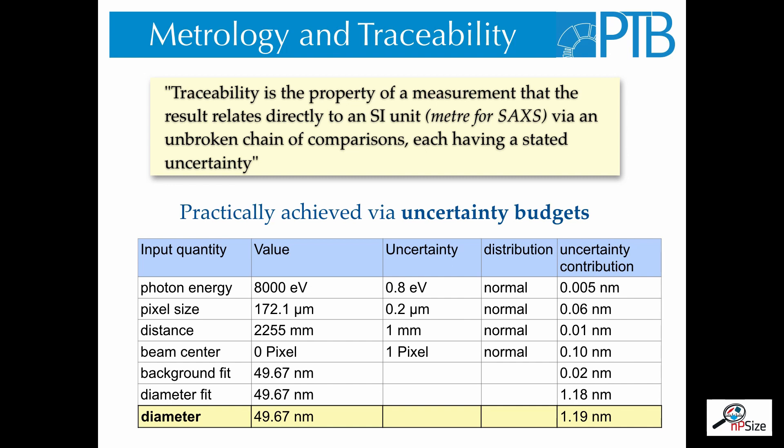In practice, we achieve this via a so-called uncertainty budget. At the bottom, you can see such an uncertainty budget. Each row of the uncertainty budget corresponds to an input quantity, which is required to compute the final value of the diameter, which is shown as the last row. For each of these input quantities, we determine the value, the uncertainty of the quantity, and how much it influences the final value, the so-called uncertainty contribution. In the end, we combine all of these uncertainty contributions into the total uncertainty of the diameter.